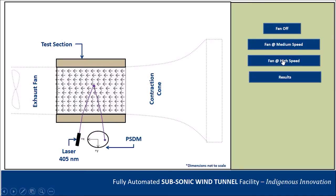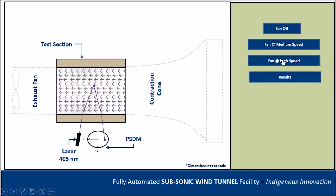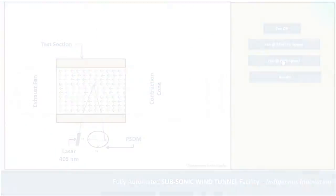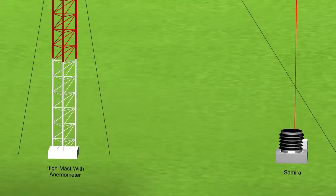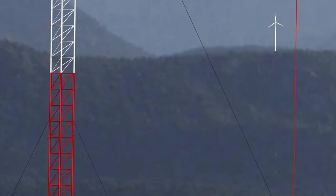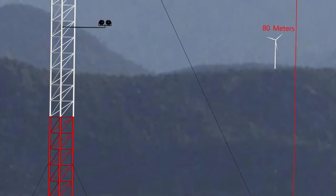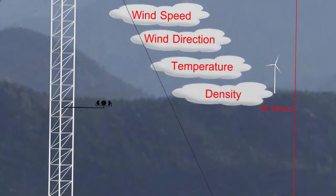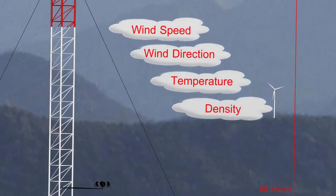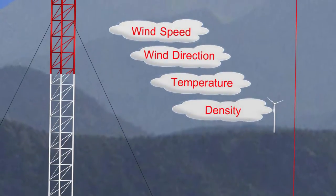The next technology I would like to introduce is Samira. Samira enables one to generate a profile of information about the environment — especially wind, temperature, and density — either in the horizontal range or in the vertical range.